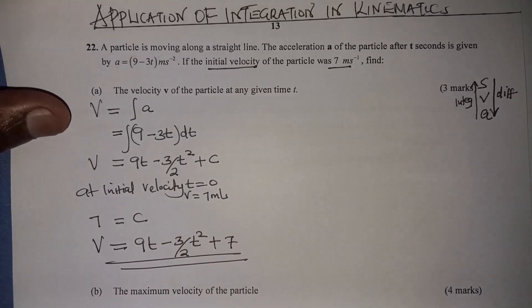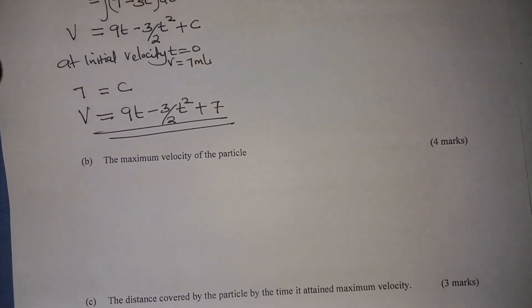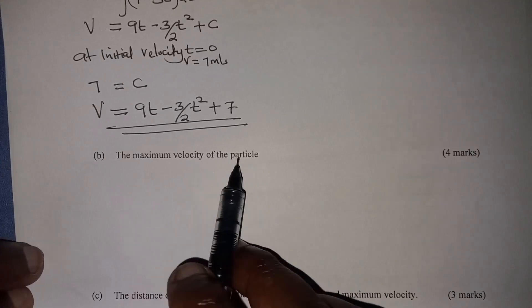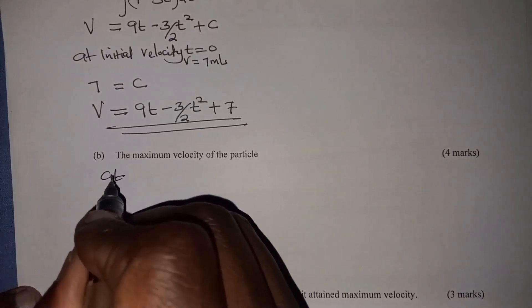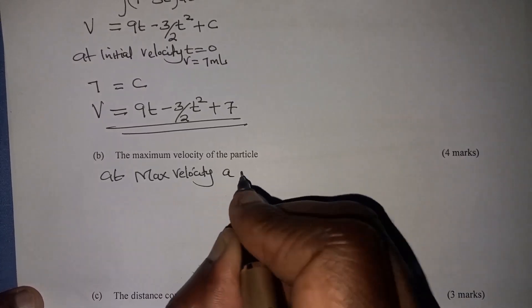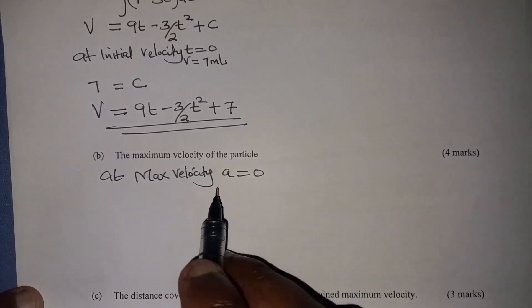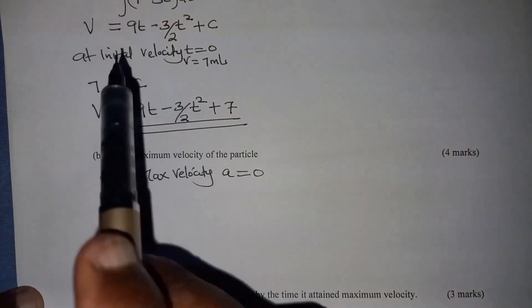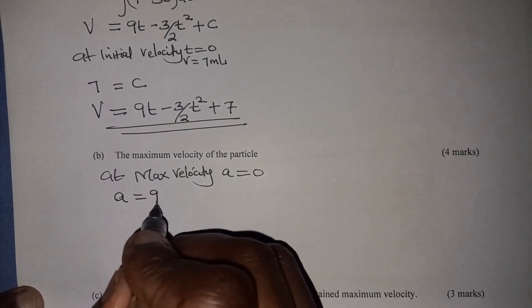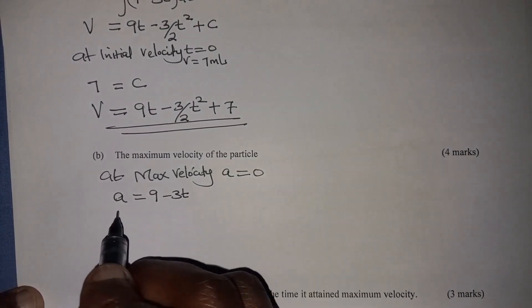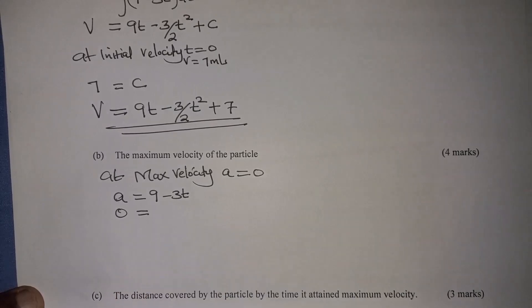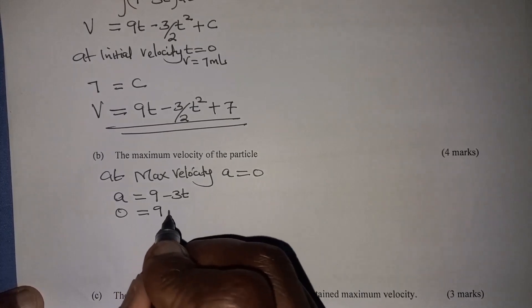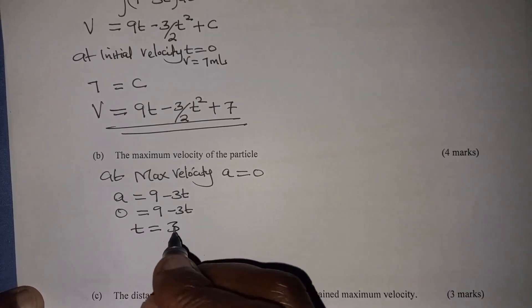Now let's go to the second part of the question. You're supposed to get the maximum velocity of the particle. You should know that at maximum velocity, acceleration will be 0. So we take the expression for acceleration: a equals 9 minus 3t, set it to 0 at maximum velocity. This gives us the time at which the particle attains maximum velocity, and we get t equals 3 seconds.